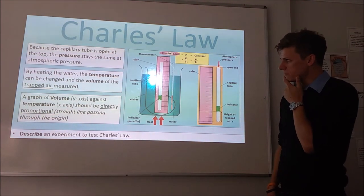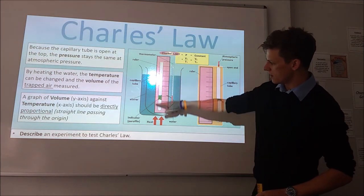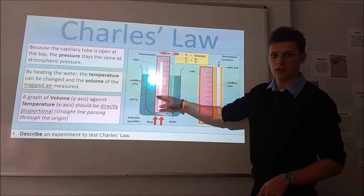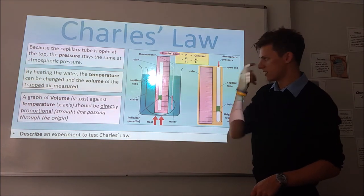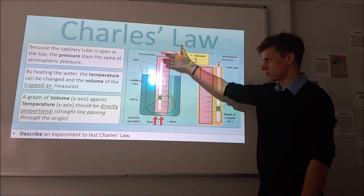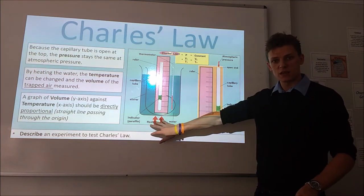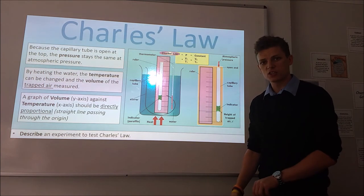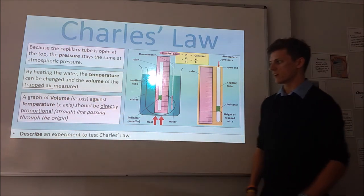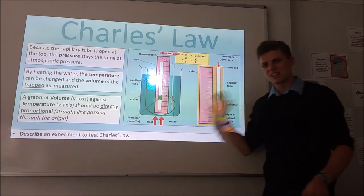To test Charles' law we typically use a capillary tube. We have air trapped beneath some oil inside the tube, with the top open to the surroundings. Because it's open to the surroundings, pressure is always atmospheric and will always equalise, keeping pressure constant. When we heat it and change the temperature, we can observe how the volume of the trapped gas changes. We plot a graph of volume against temperature, and if Charles' law is correct we should get a straight line passing through the origin.